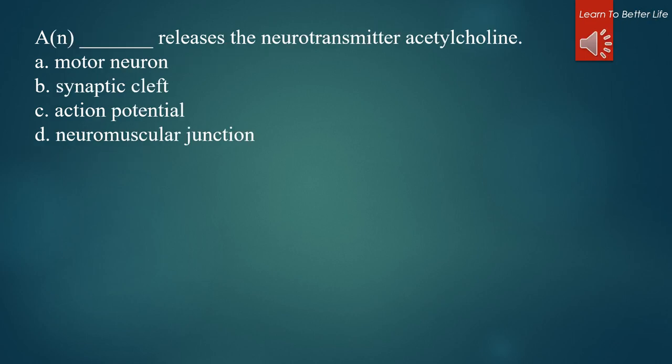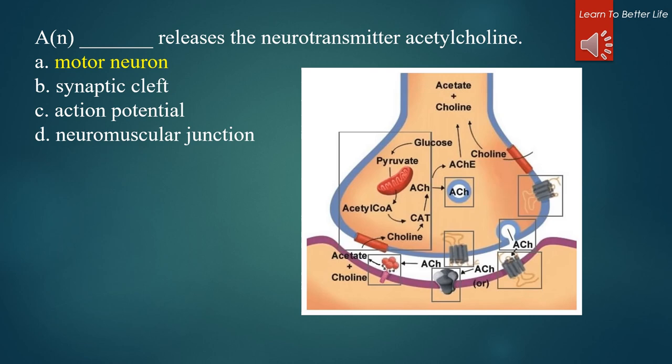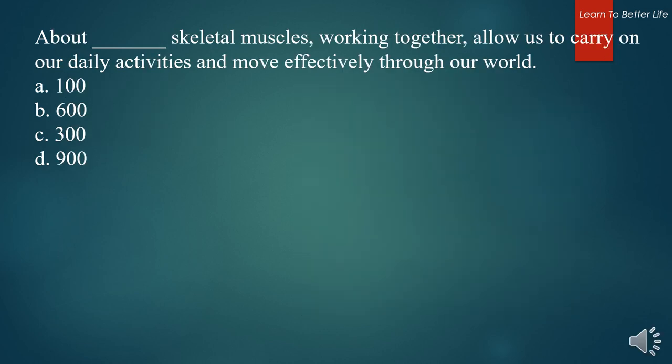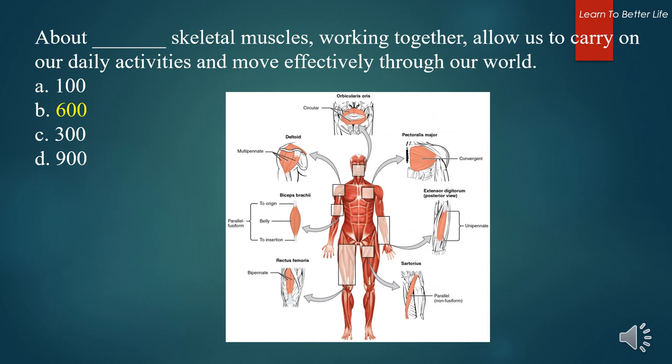What releases the neurotransmitter acetylcholine? A. Motor neuron. B. Synaptic cleft. C. Action potential. D. Neuromuscular junction. The answer is A. Motor neuron. About how many skeletal muscles, working together, allow us to carry on our daily activities and move effectively through our world? 100, 600, 300, or 900. About 600 muscles.